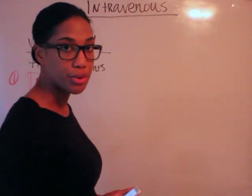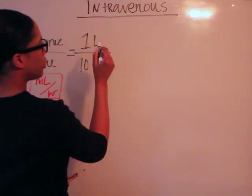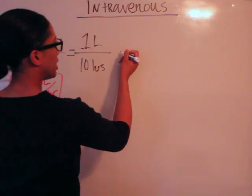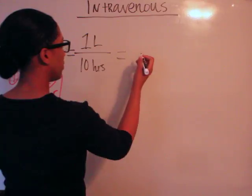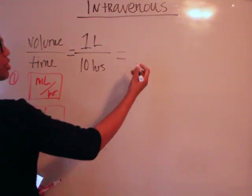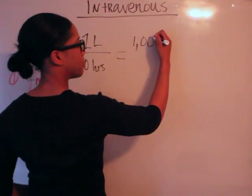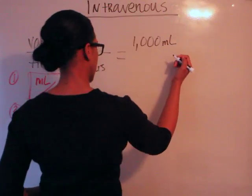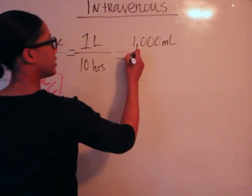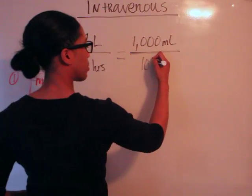Let's go ahead and knock this first one out. But first we need to convert, right? We have one liter here and that one liter is equivalent to, for milliliters, 1,000 milliliters, and still over 10 hours.